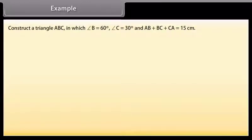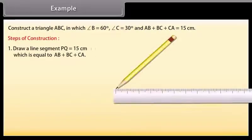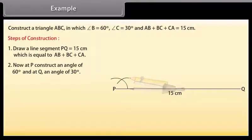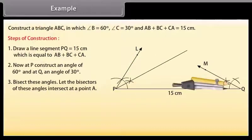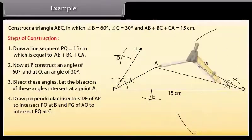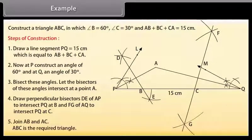Example: construct a triangle ABC in which angle B is 60 degrees, angle C is 30 degrees, and AB plus BC plus CA equals 15 cm. Steps of construction: draw a line segment PQ equal to 15 cm. At P construct an angle of 60 degrees and at Q an angle of 30 degrees. Bisect these angles and let the bisectors intersect at point A. Draw perpendicular bisectors of AP and AQ to intersect PQ at B and C respectively. Join AB and AC. Then ABC is the required triangle.